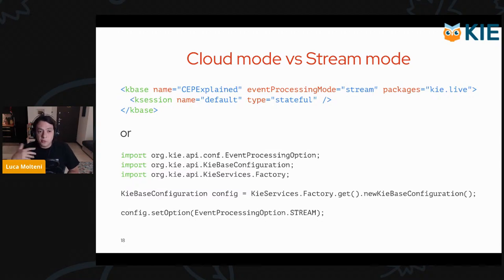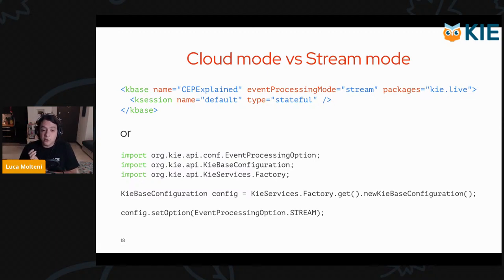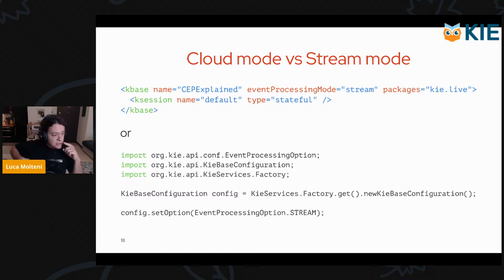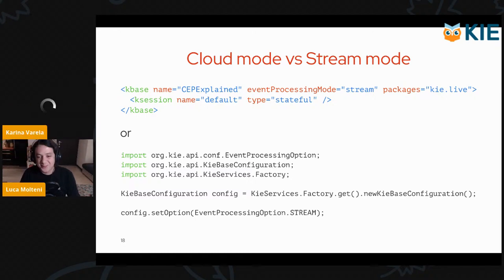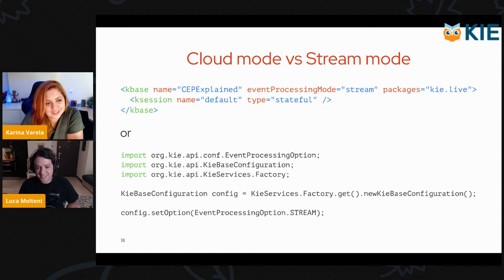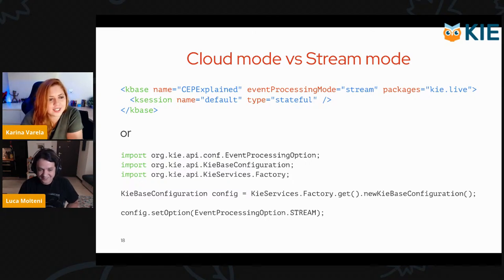To configure Cloud mode or Stream mode, you can do it in the KModule XML or in Java. Most of the time you'll probably do it in KModule XML, because in most projects you either have CEP enabled or you don't. But you also have a Java programmatic interface. The interesting part: if you take a look at the KSession, the type is stateful session. Do you know why, Karina? Because generally we maintain facts in memory even after the request is finished. Exactly — perfect.